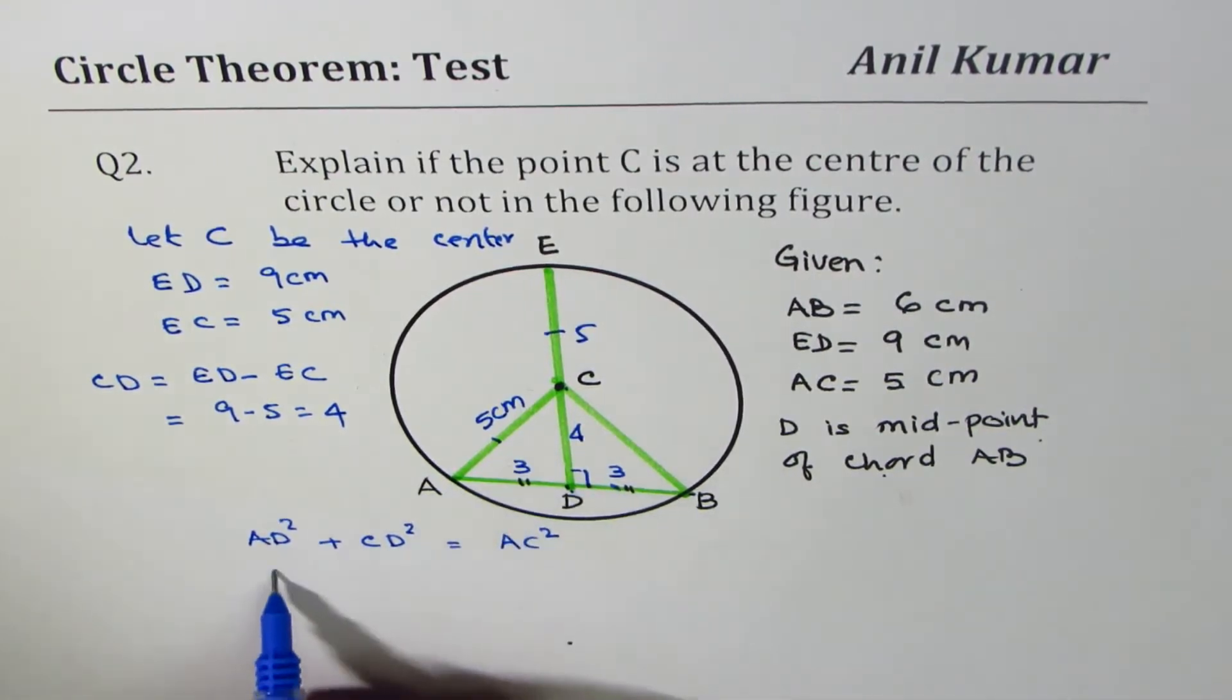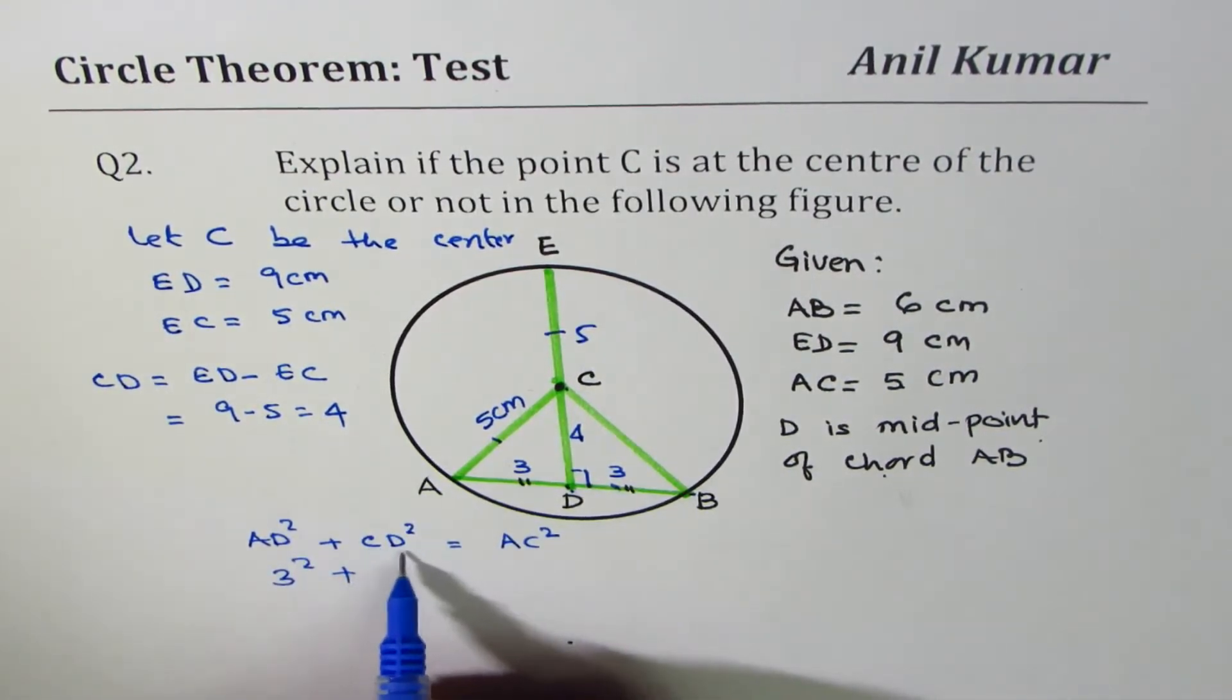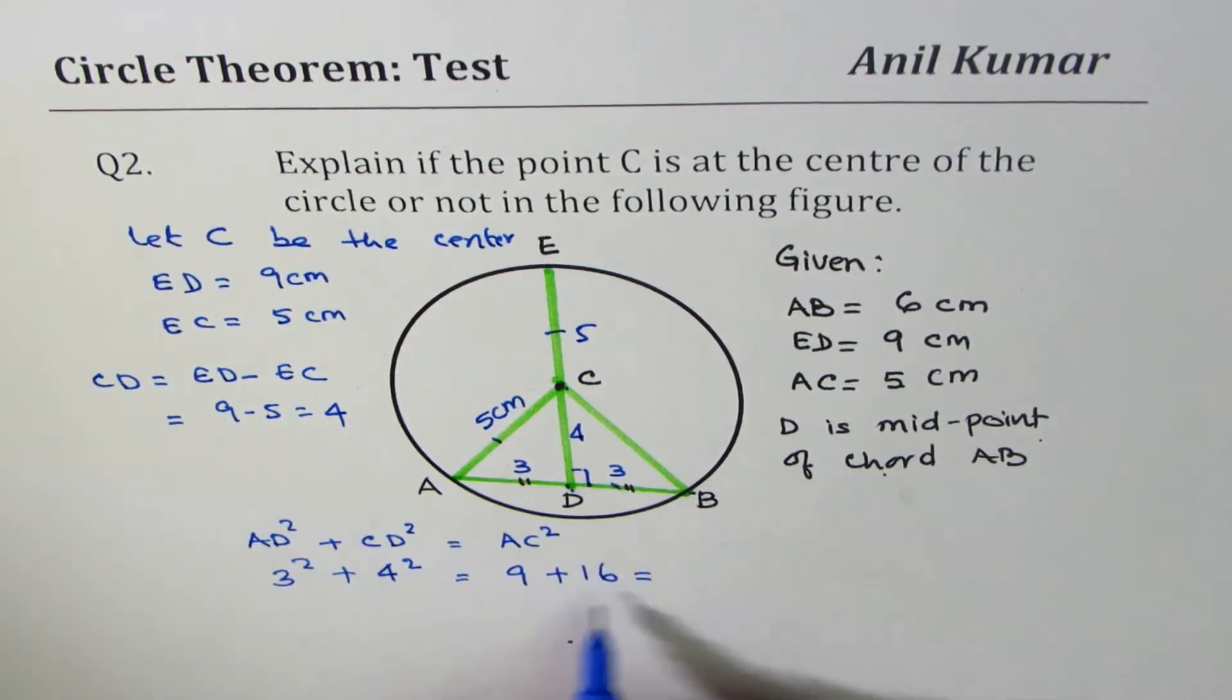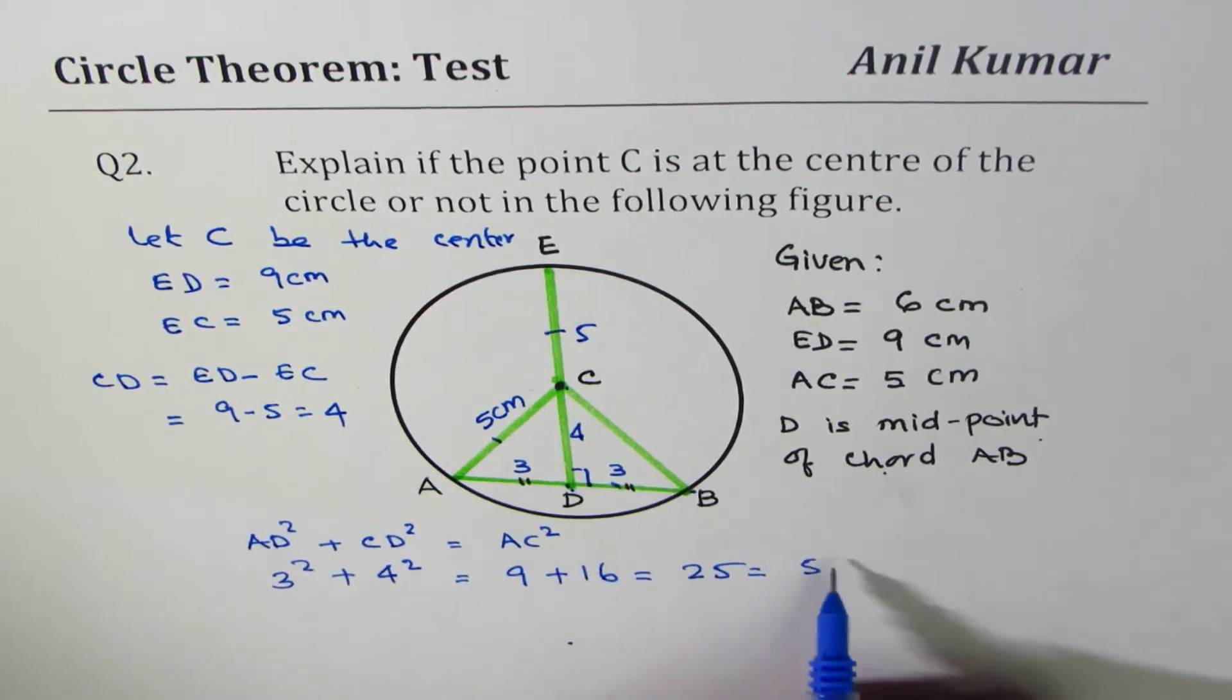AD square is 3, 3 square plus CD square is 4, right? 4 square. So which is equal to 9 plus 16 and which is equal to 25 and 25 is 5 square.